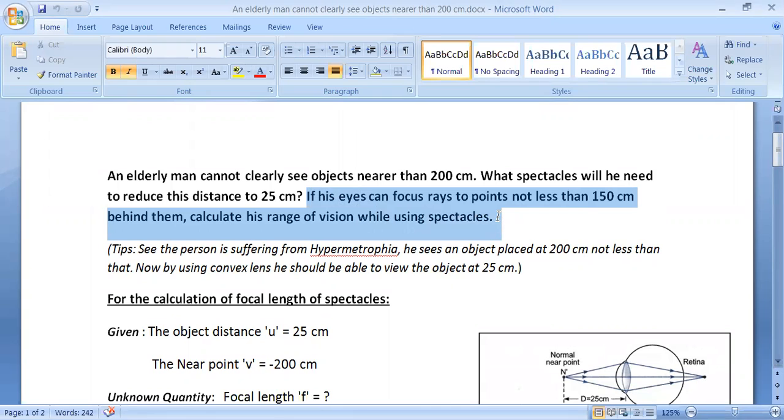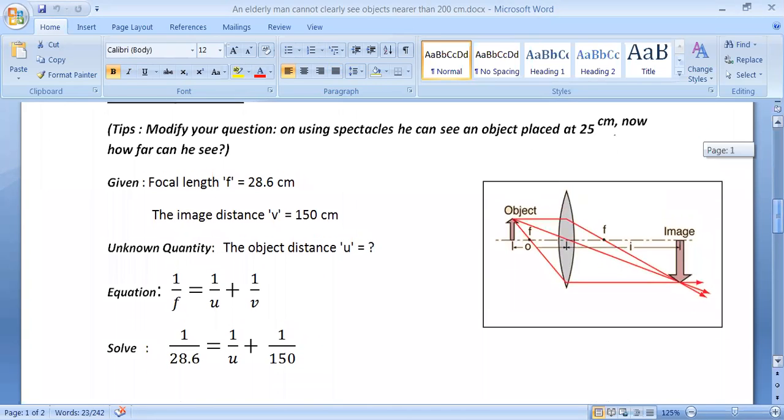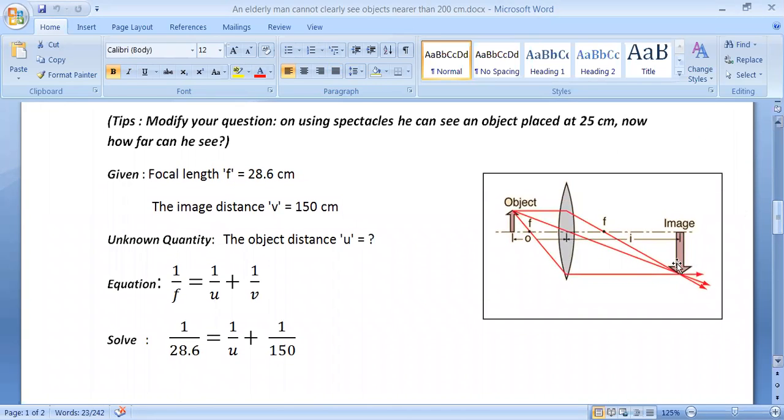Let us go to the figure here. Now, when using the spectacle, this lens can focus rays to points not less than 150 centimeters. That is, the distance from this lens to this image is 150 centimeters. So this image distance cannot be less than 150 centimeters.